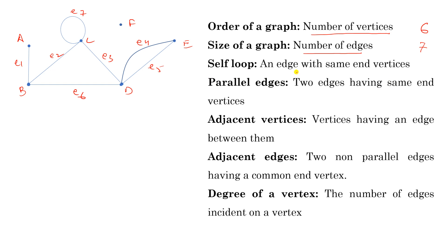A self-loop is an edge with the same end vertices. For example, E7 can be written as (C, C) — the end vertices are the same, so E7 is a self-loop. Parallel edges: two edges are said to be parallel if they have the same end vertices. For example, E4 and E5 have the same end vertices, so they are parallel edges.